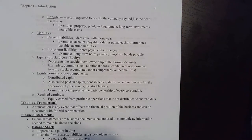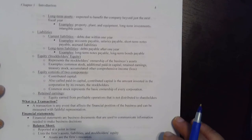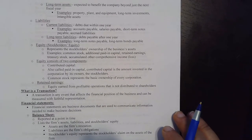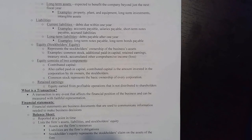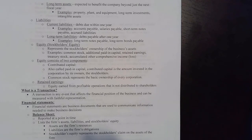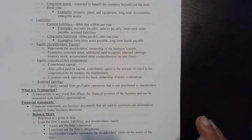Liabilities mean something a business owes to other people — it's a debt you have to pay at a later date. Liabilities also come in two flavors: current liabilities and long-term liabilities. Current liabilities are those due within one fiscal year or calendar year. A fiscal year does not always follow the calendar year; for example, Walmart's fiscal year starts February 1st and ends January 31st, while most companies use the calendar year January through December.